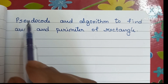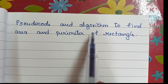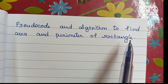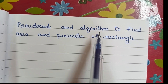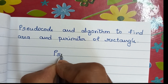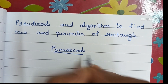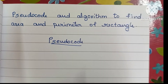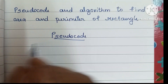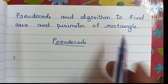In this video we are going to learn how to write pseudocode and algorithm to find the area and perimeter of a rectangle. First we are going to write pseudocode. Pseudocode is a detailed description of what a computer programming language should do.